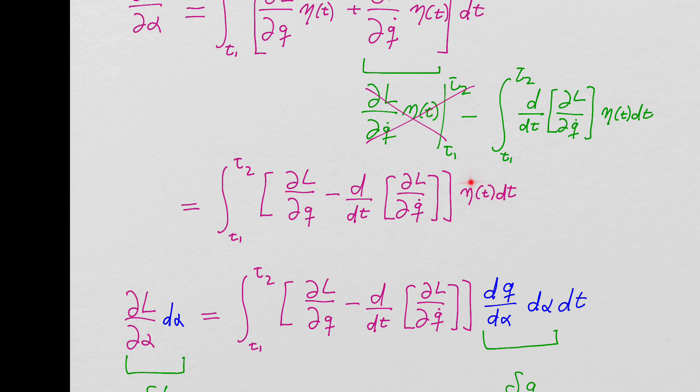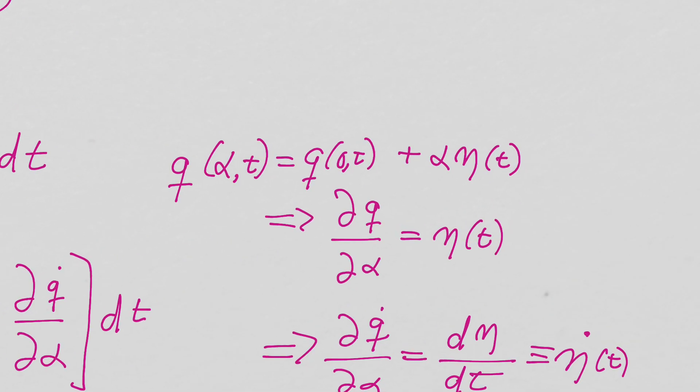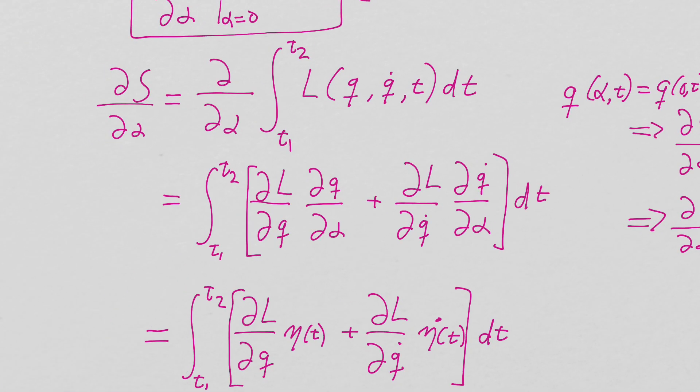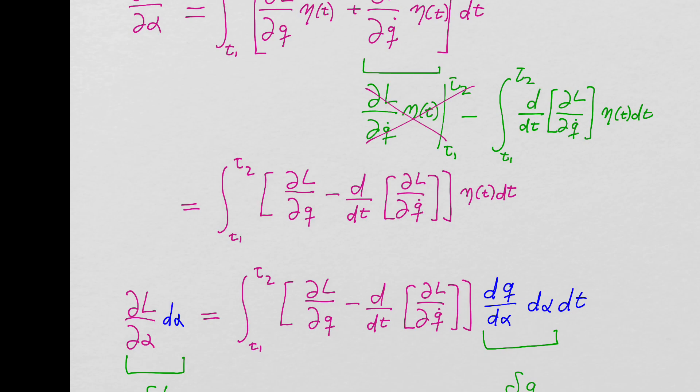But the difference now is we've got this eta T function, which is an arbitrary function, because that's our arbitrary variation. And in this case, although the variation goes to zero at the endpoints, this does not have to be infinitesimal. Alpha is the thing that drives the infinitesimal nature of everything. This could be some huge thing. As long as it's zero at t1 and t2, this could be gigantic. Alpha is what keeps this small. And we're looking for dS d alpha. So we're probing the local area of this action as we change alpha.